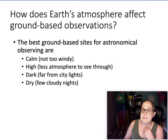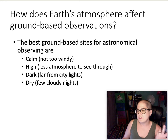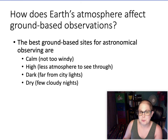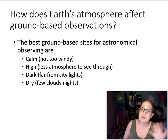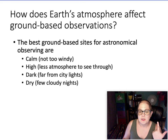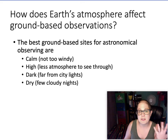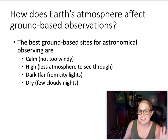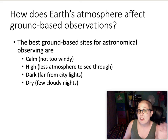Earth-based observations are affected by the Earth's atmosphere. As humans we like the atmosphere because we like to breathe, but as astronomers we don't always like it because it affects our observations. The best ground-based sites for astronomy require a calm location — not super windy — at high altitude, because the higher you are the less atmosphere you have to worry about. You want a place that's dark, far away from light sources, and dry with few cloudy nights.